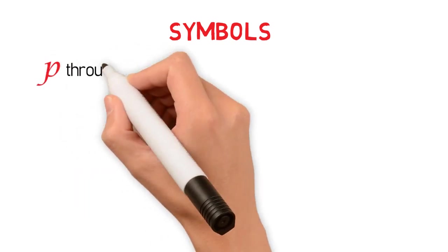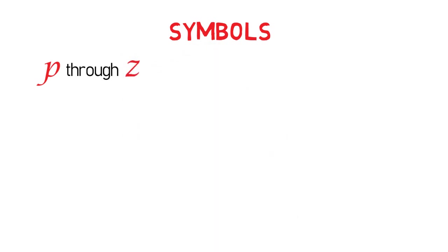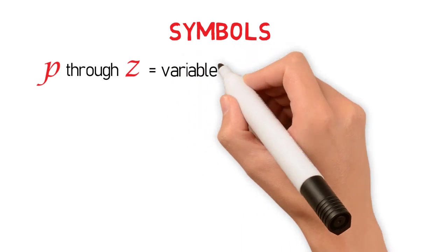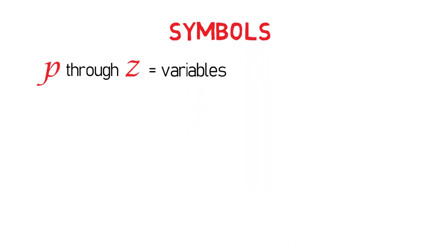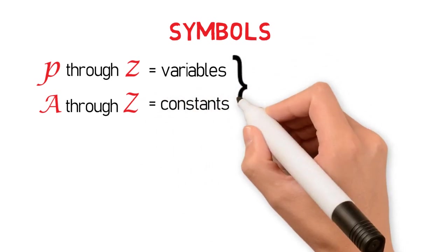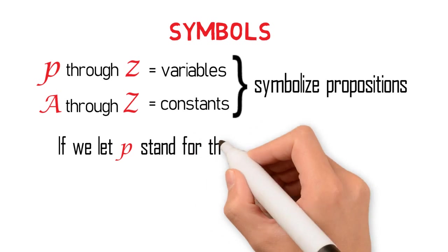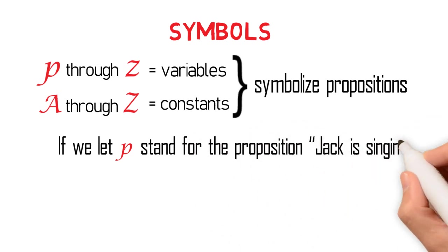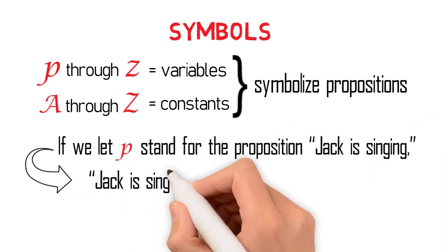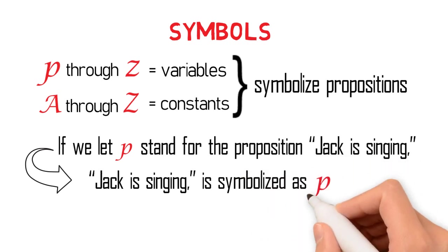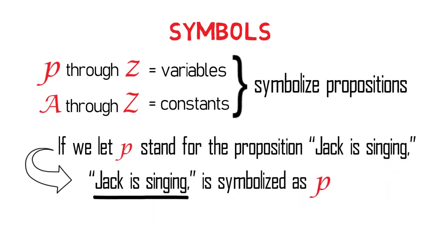Logicians use the lowercase of the English alphabet, P through Z, to symbolize propositions. They are called variables. The uppercase A through Z are called constants. For example, if we let P stand for the proposition 'Jack is singing,' then it is symbolized as P. Thus, instead of saying 'Jack is singing,' we just say P.